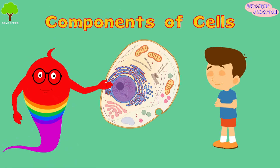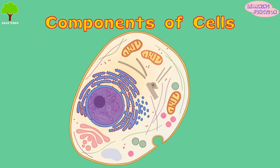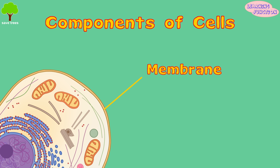Let's see the components of cells. Membrane: this is the outer boundary of the cell, like the skin. It allows some substances in and keeps the extras out.